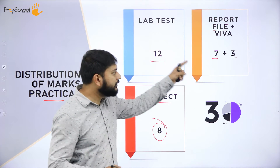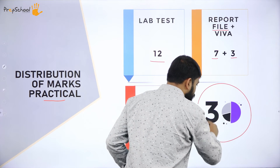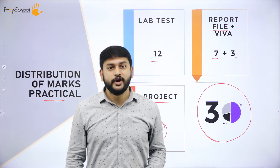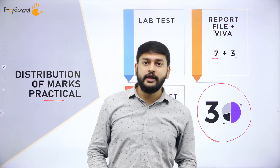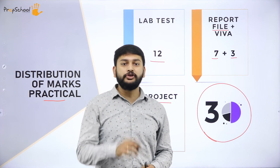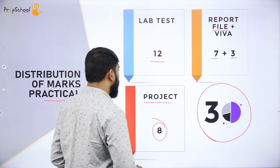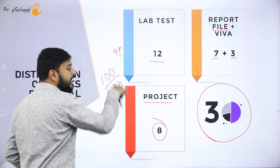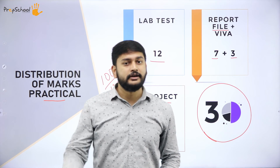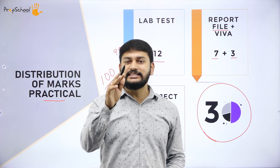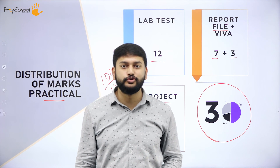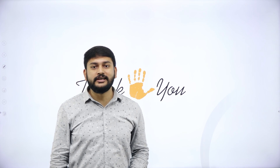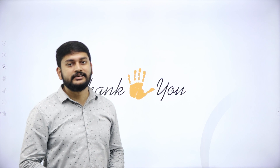If you add all the practical marks, you get 30. I want all of you to score 30 on 30 — there is no number called 29 for me. Be meticulous. Let's aim for 100 on 100. If you follow my classes, I promise you can easily score 100 on 100. Thank you very much. Take care. Bye-bye.